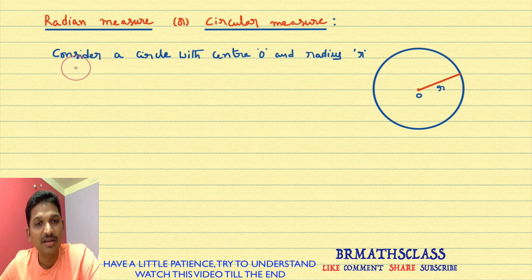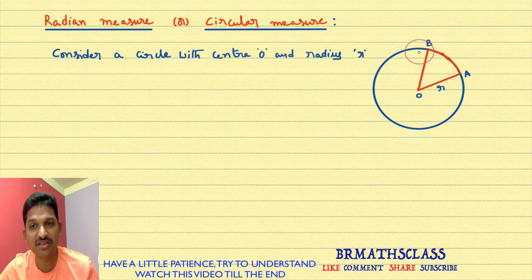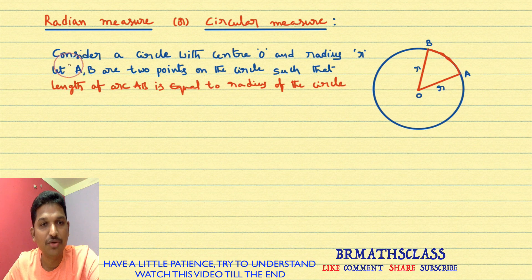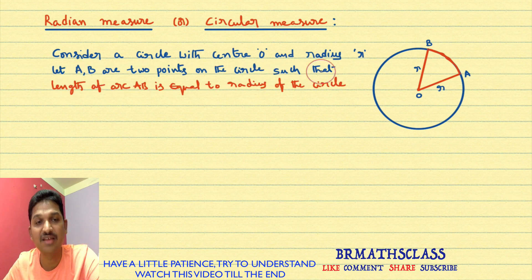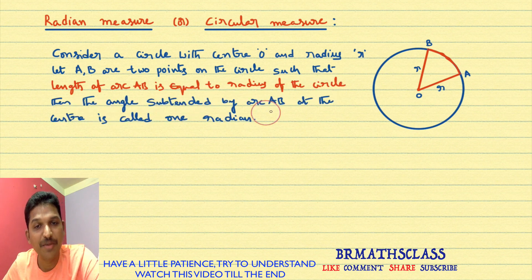First, I will consider a circle with center O and radius R. You observe the diagram. I am considering two points on the circle such that the length of arc AB is equal to the radius of the circle.